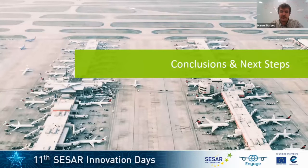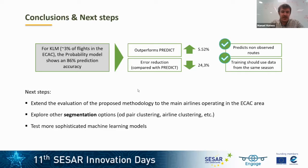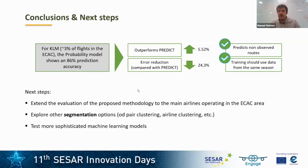In summary, the route probability model for KLM — covering 3% of ECAC flights — achieves 86% accuracy, outperforming Predict by more than 5%. More importantly, the number of wrong predictions made by Predict is reduced by 24.3%. The model is also able to predict non-observed routes, and training should use data from the same season.